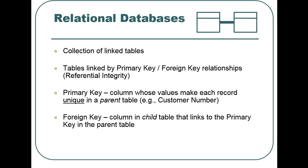A relational database is simply a collection of linked tables. Tables are linked via a primary key-foreign key relationship. The primary key uniquely identifies a record in a parent table, and a foreign key links a child table back to the primary key in the parent table.